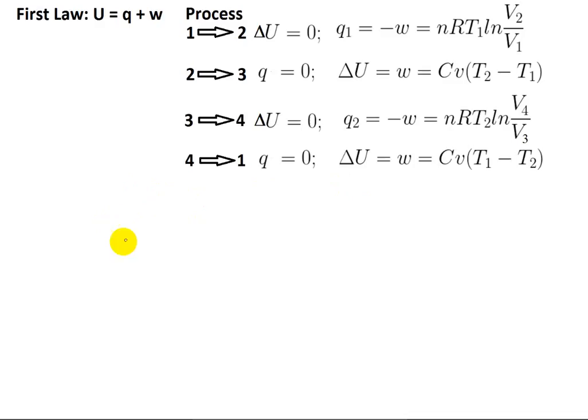Alright, so let's see what we can do about the derivation. Let's write out what we're going to try to derive. Efficiency is going to be equal to 1 minus T2 over T1, in other words T cold over T hot. Now that's our goal. That's where we're headed in this derivation.